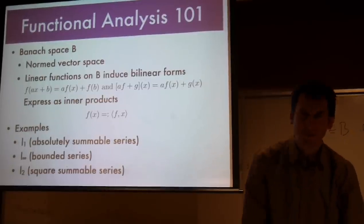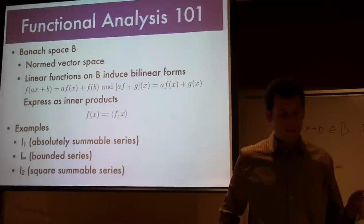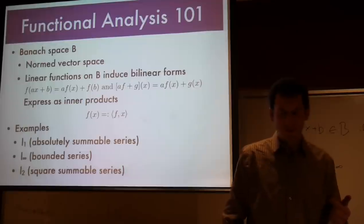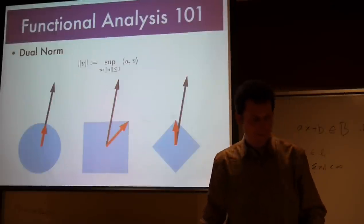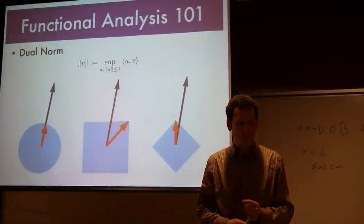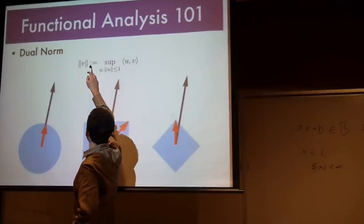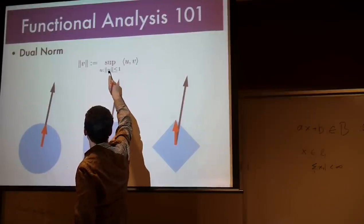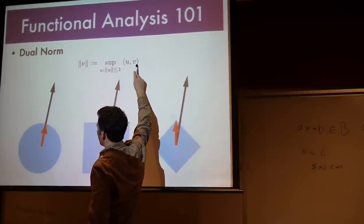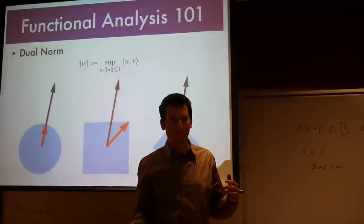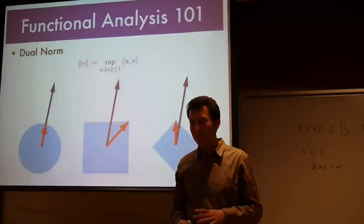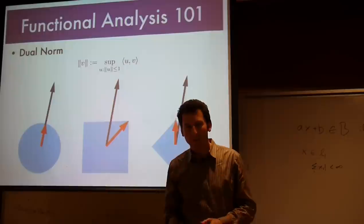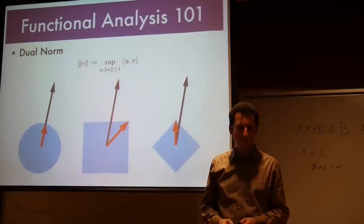What would be nice is if we could also induce a norm on the space of linear forms, the space of these Fs and Gs. We already have a norm on the Xs and Bs. So can we induce a norm on the F and Gs? Here's the trick how to get that. It's called the dual norm. It basically says that the norm of V is the sup over all U with the constraint that the norm of U is less or equal than 1 of the inner product between U and V.